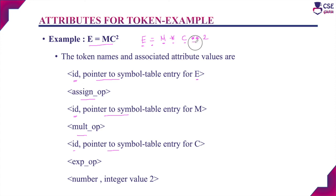Next is the exponential operator — that is an operator, the token is exponential operator. '2' is a number; that number is entered and its integer value is 2. For identifiers, we make an entry into the symbol table and the attribute value is a pointer to the symbol table. For operators, punctuation symbols, and keywords, it is not necessary to make an entry into the symbol table. This is the attributes for tokens.